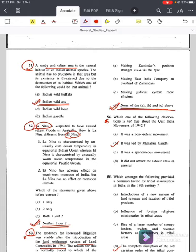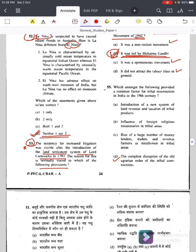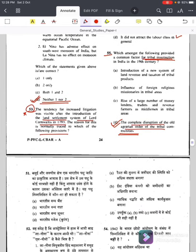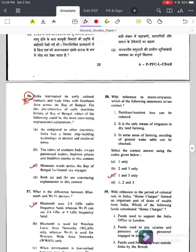Question number fifty-three, again this is very important because many institutions have given different answers. A tendency for increased litigation was visible after the introduction of land settlement system of Lord Cornwallis in 1793. The reason for this is normally traced to which of the following provisions? Its answer is D, none of the above A, B, C. UPSC official answer key is D. Then again similar kind of question, question number fifty-four with respect to history, Quit India Movement. Which one of the following observations is not true about the Quit India Movement 1942? Answer is B, it was led by Mahatma Gandhi. It is not true. All other statements are true: it was a non-violent movement, it was a spontaneous movement, it did not attract the labor class in general.